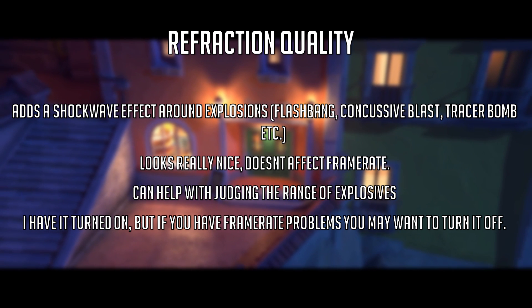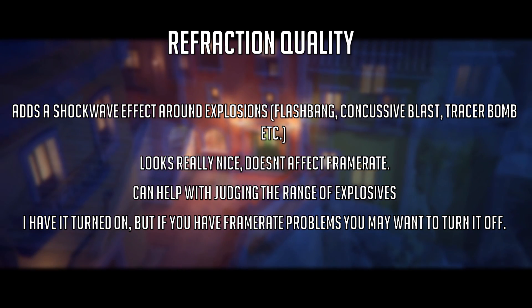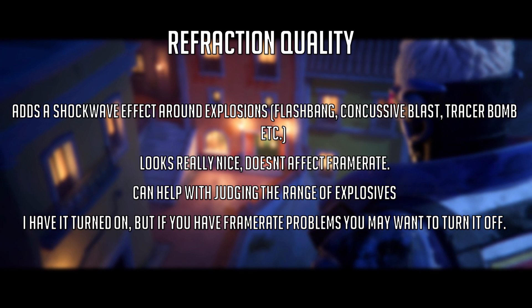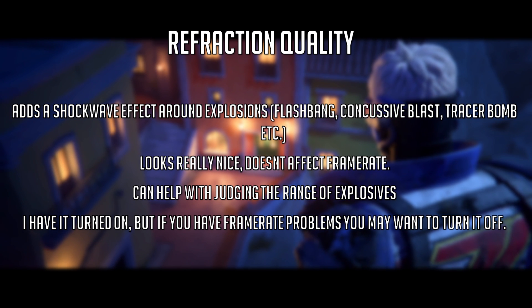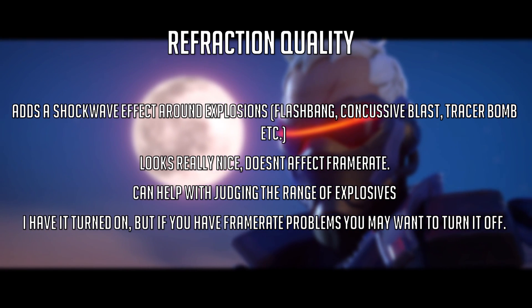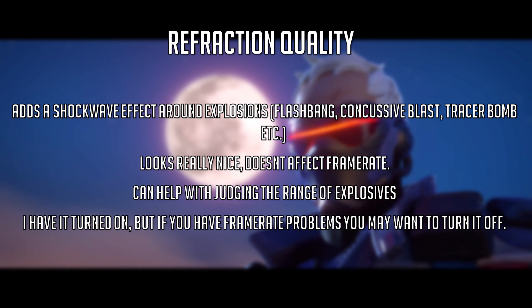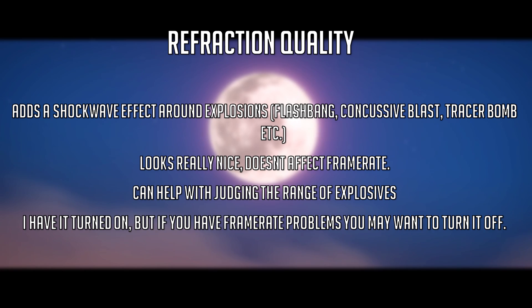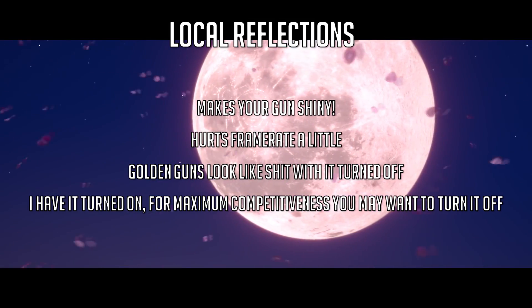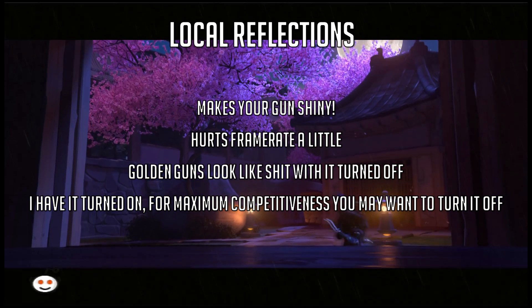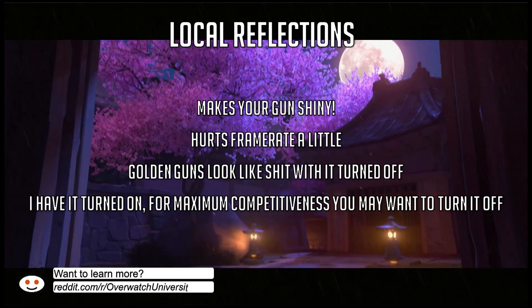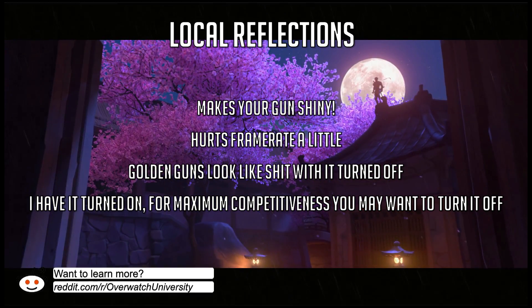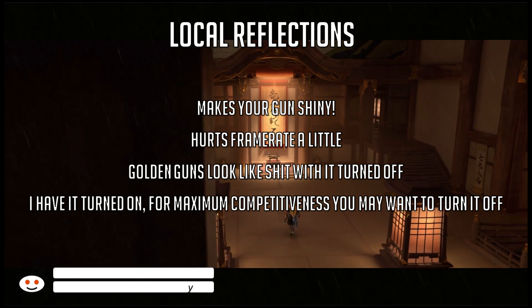Refraction quality adds a shockwave effect around explosions — for instance, McCree's flashbang, concussive blast, and Tracer's bomb. This looks really nice and it doesn't really affect frame rate by much. It can also help with judging the range of explosives. I personally have it turned off, but if you have frame rate problems then you may want to turn it off too. Local reflections makes your gun shiny. It hurts frame rate a little. However, golden guns look bad when it's turned off. I personally have it turned on for maximum competitiveness, but you may want to turn it off.